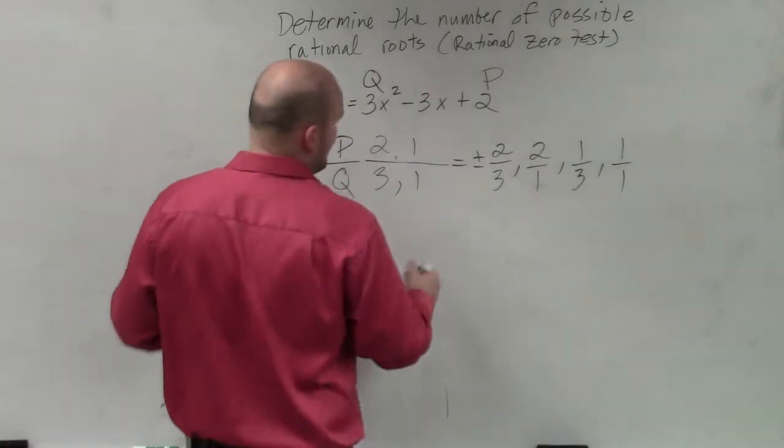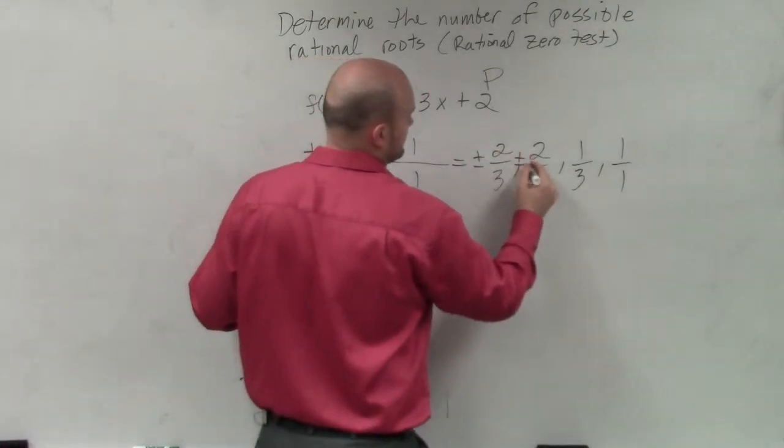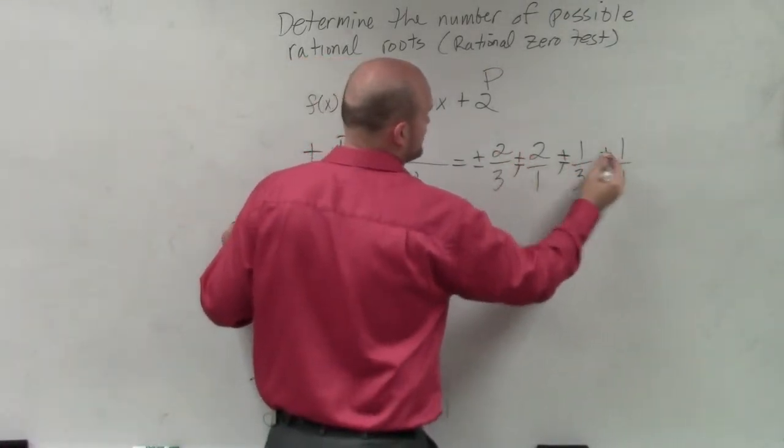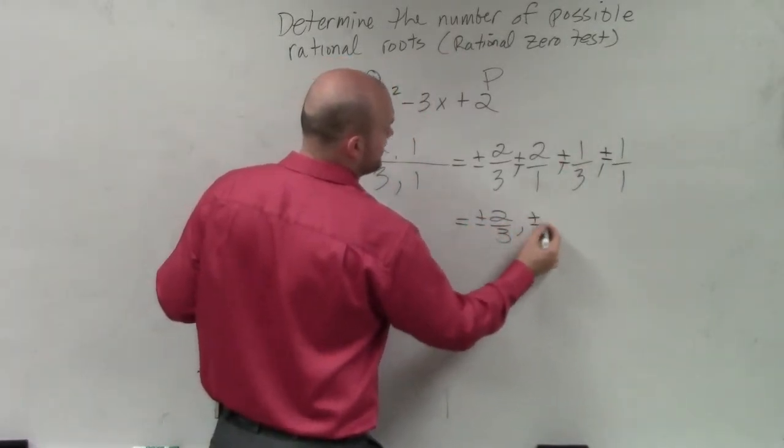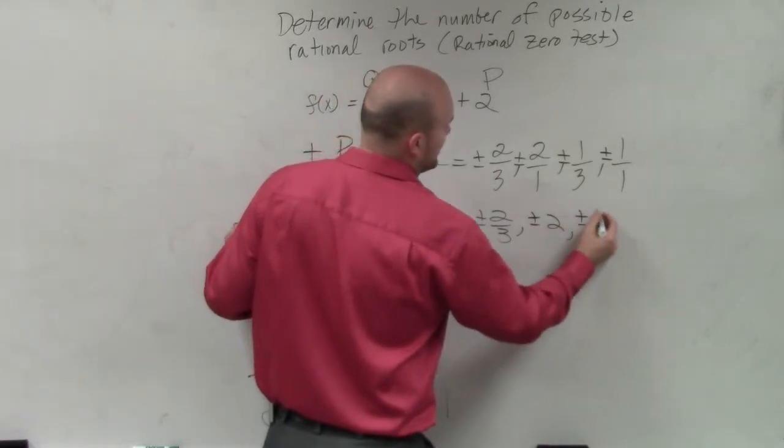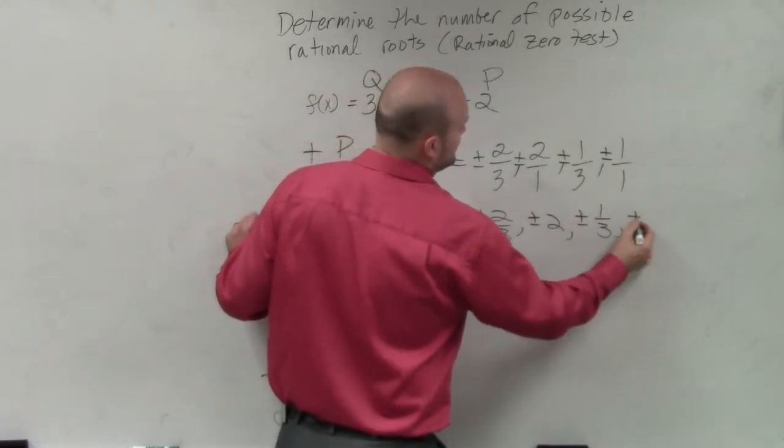So therefore, when I simplify that, that's plus or minus for every one of these. So I have plus or minus 2 thirds, plus or minus 2, plus or minus 1 third, plus or minus 1.